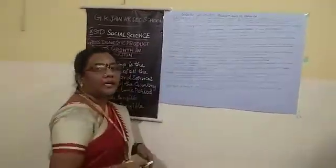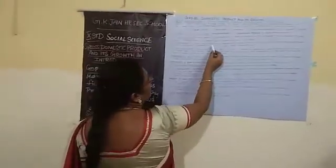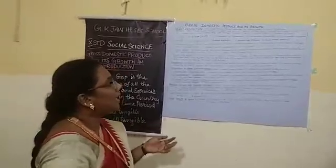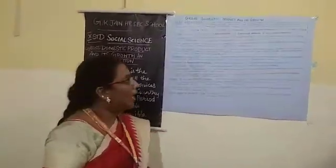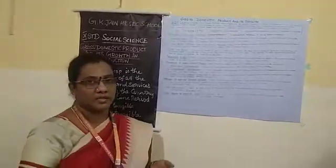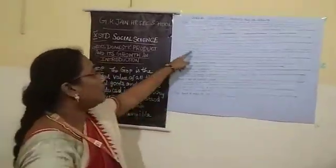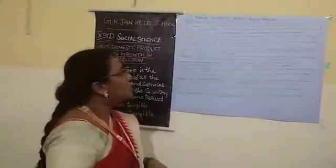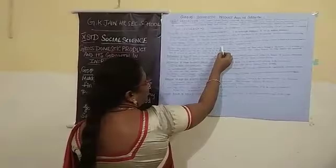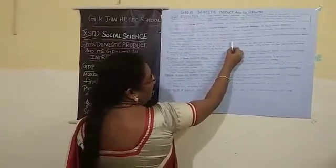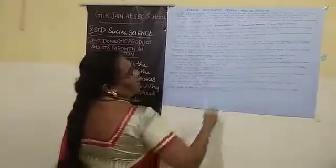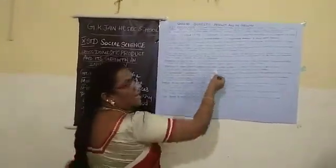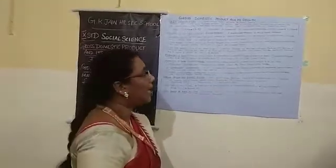The second method is the income approach. This method looks at the GDP from the perspective of earnings of men or women who are involved in producing goods and services. The income approach measures GDP where Y denotes income: Y equals wages plus rent plus interest plus profit.